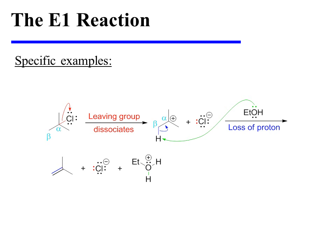In this specific example, chloride dissociates from tertiary butyl chloride. The tertiary carbocation that results then loses a proton to the weak base, ethanol. As the proton is lost, electrons from the sigma bond collapse in between alpha and beta, forming the pi bond of the alkene product.